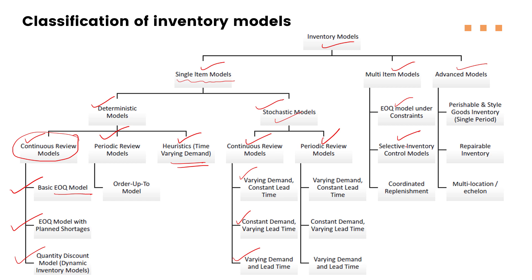We also have other selective inventory models and advanced models. In the upcoming lectures, we will start from single-item models and go into the continuous review model, discussing in detail the basic Economic Order Quantity model. I hope you got the idea regarding on what basis we can select the proper inventory model. Thank you so much — see you in the next video.